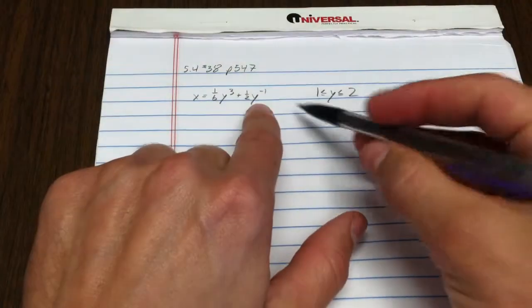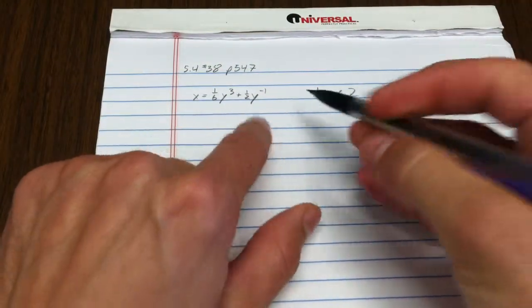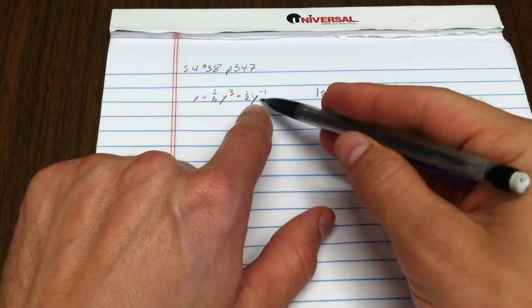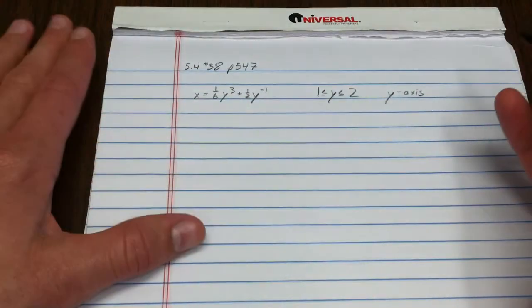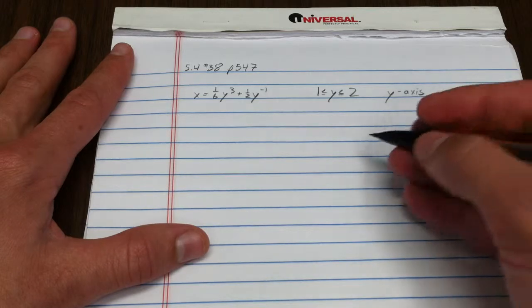I've rewritten that problem, but notice that I've rewritten it with y to the negative one. I prefer to think about these problems instead of writing one over y as a negative power, since I'm going to have to take the derivative of that at some point.